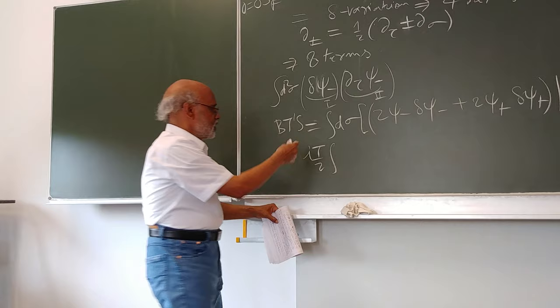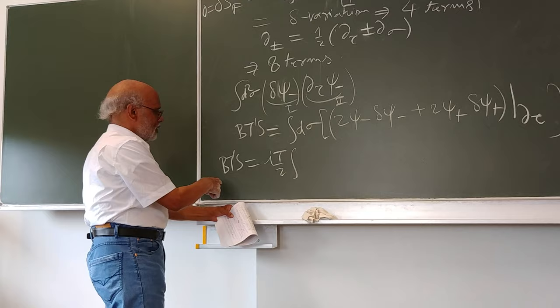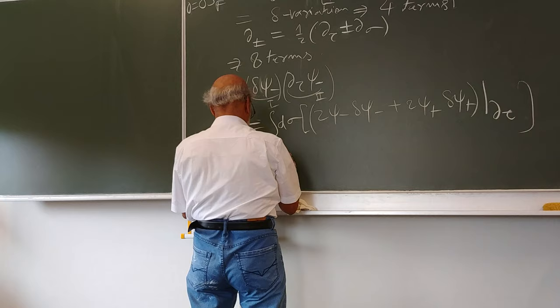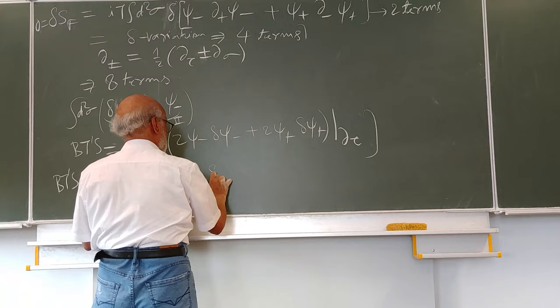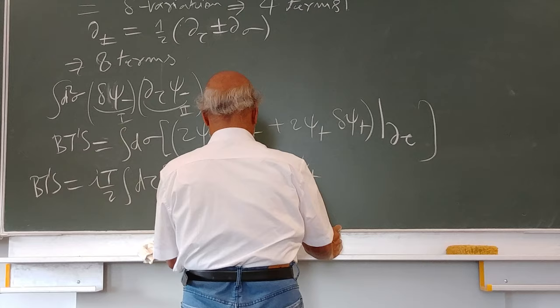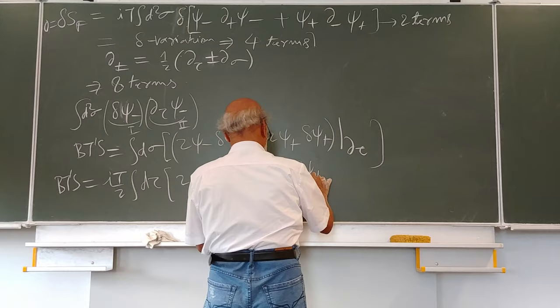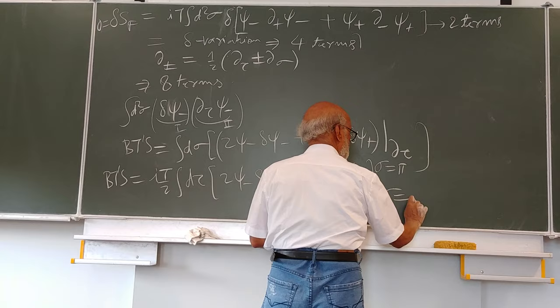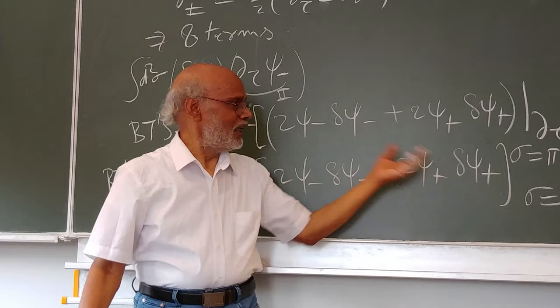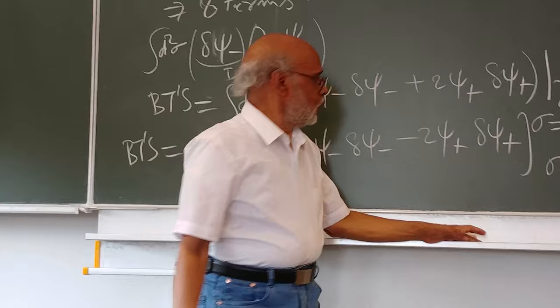Similarly you have spatial boundary terms. These would be: d-tau times (y psi-minus delta psi-minus plus pi psi-plus delta psi-plus), evaluated at sigma equals pi and sigma equals zero — so this quantity at sigma equals pi minus this quantity at sigma equals zero.